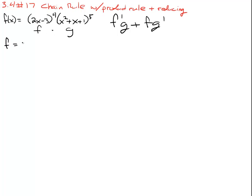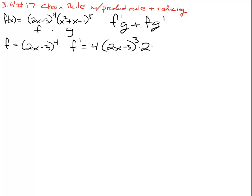So f is just (2x minus 3) to the fourth. So f prime is 4 times (2x minus 3) cubed, then times the derivative of the inside which is 2 — that's the chain rule. So we can clean that up and just write it as 8 times (2x minus 3) cubed.